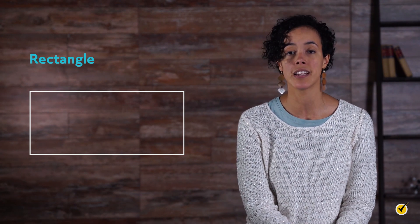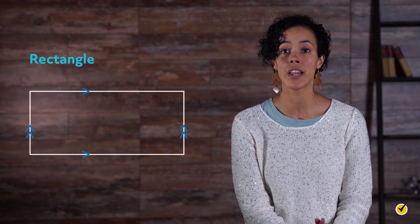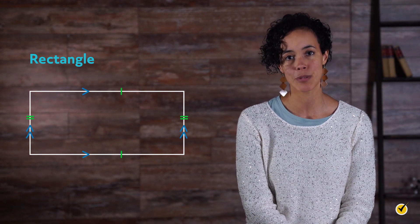A rectangle is a shape we all know well since it appears in the real world so often, but one thing we don't usually think about is that rectangles are just a special kind of parallelogram. That means that the opposite sides are both parallel and congruent, just like our first parallelogram.